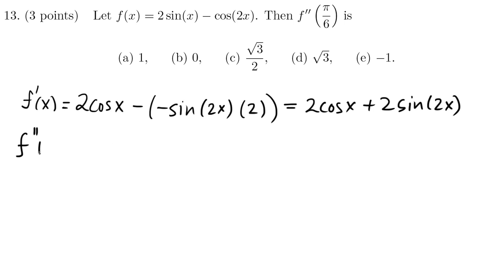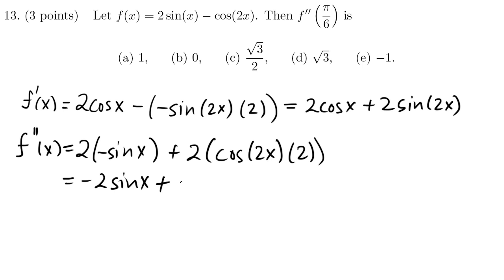Let's take the second derivative. 2 times the derivative of cosine, which is minus sine x, plus 2. The derivative of sine 2x by chain rule is going to be cos 2x times the derivative of 2x, which is 2. Simplify that a little bit. 2 times 2 here is 4.